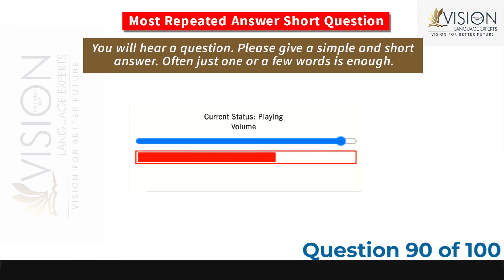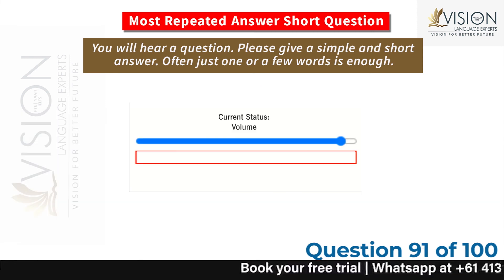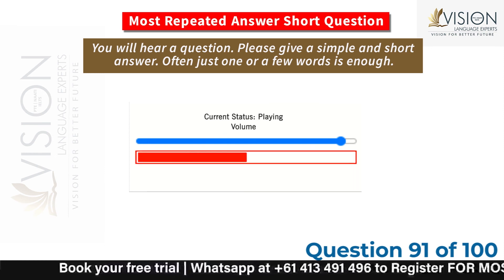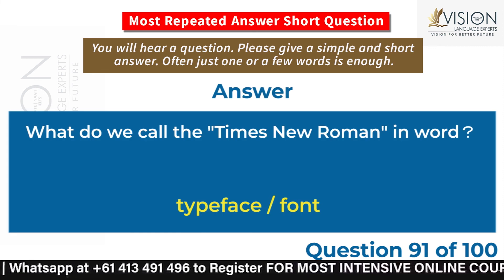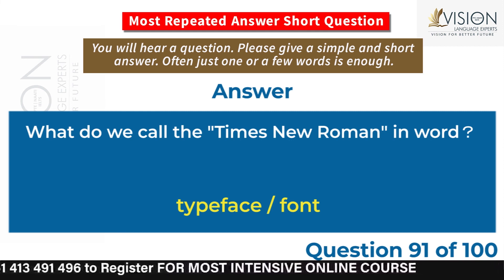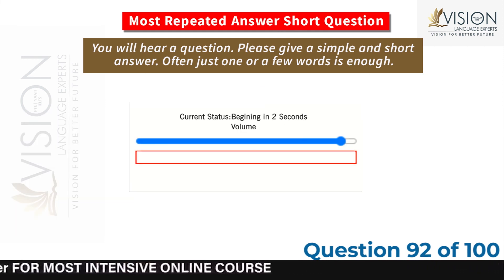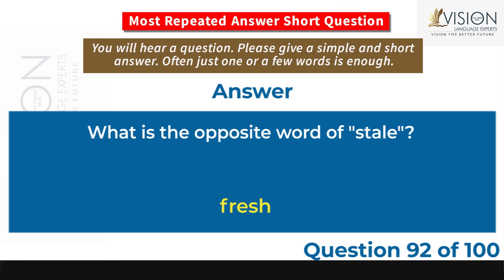Which kind of mountain can erupt? Volcano. What do we call Times New Roman in Word? Typeface, font. What is the opposite word of stale? Fresh.